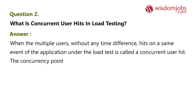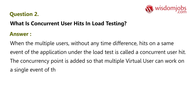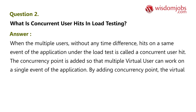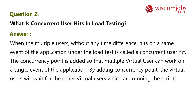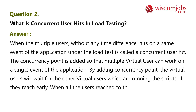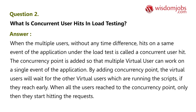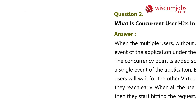A concurrency point is added so that multiple virtual users can work on a single event of the application. By adding a concurrency point, the virtual users will wait for the other virtual users running the scripts if they reach early. When all the users reach the concurrency point, only then they start hitting the request.